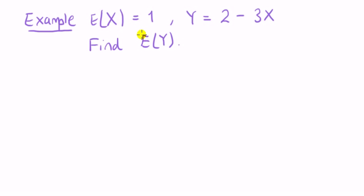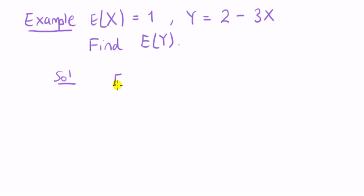Let's look at a simple example. The expected value of x is one, and y is equal to two minus three times x. We want to find the expected value of y. We take the expectation of the left-hand side and the expectation of the right-hand side.